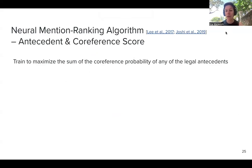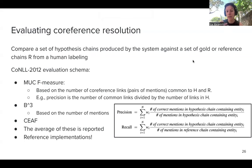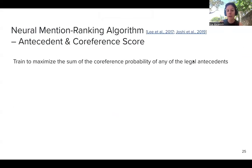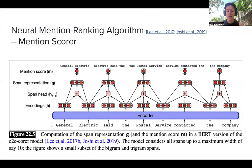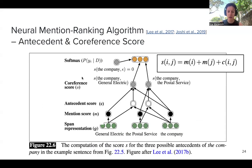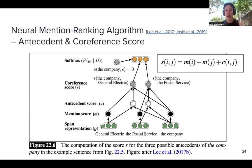Where we left off last time, we talked about the neural mention ranking algorithm — an end-to-end approach for co-reference resolution, which is the task of finding all mentions in the text. Mentions are usually noun phrases, pronouns, or proper names. After finding all possible mentions in a data-driven fashion, another set of layers decides which mention pairs have a co-reference relationship between them and which do not.